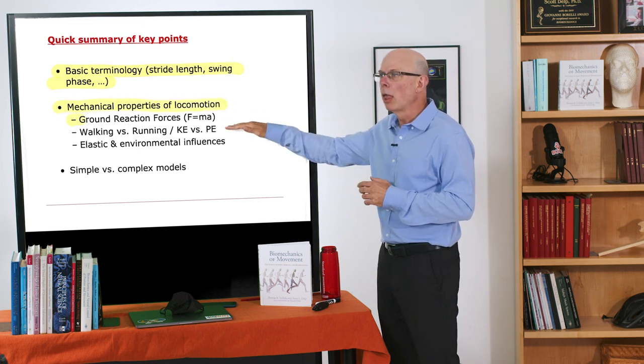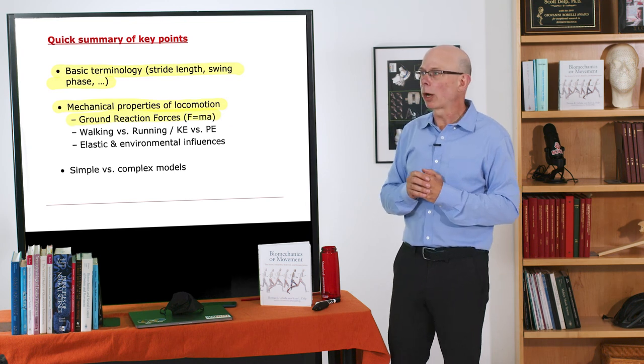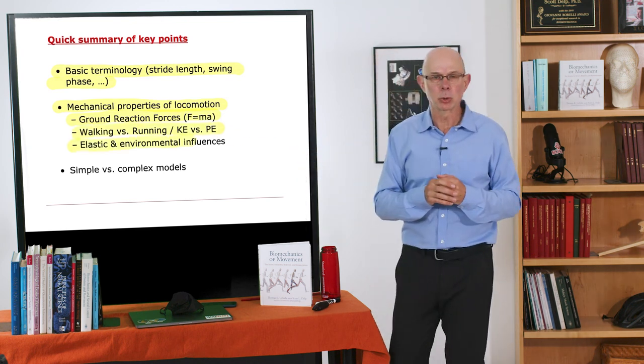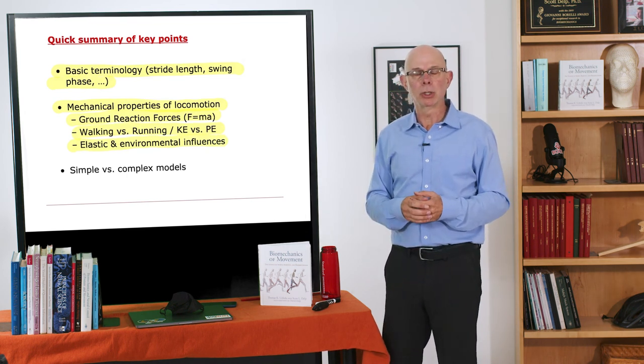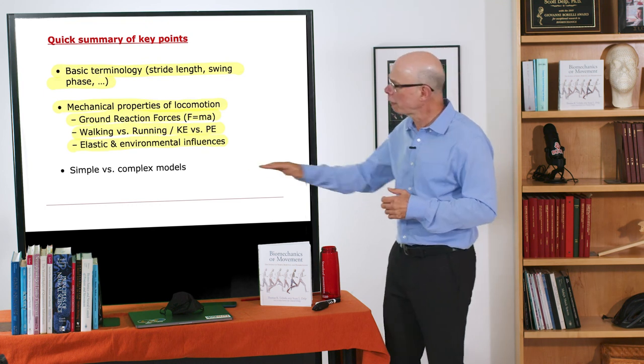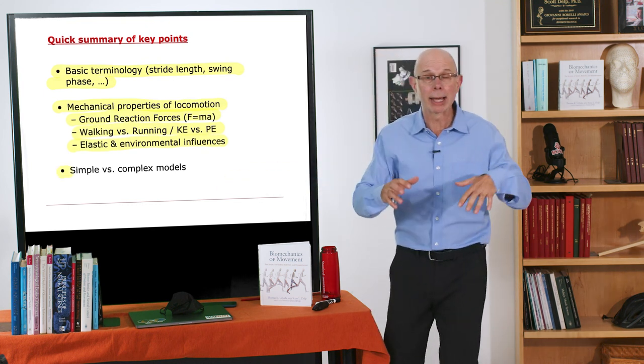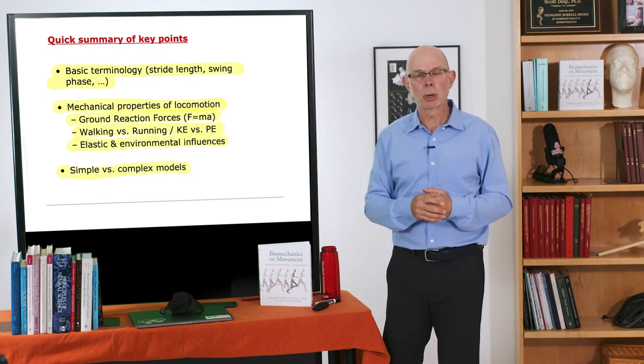Some key concepts are these mechanical properties of locomotion: Newton's second law, the gravitational and potential energy during running and walking, and the elastic environmental influences. So how do tendon elasticity affect locomotion? And how does gravity affect locomotion? And finally, we just touched on, and we'll get into this much more, simple models versus complex models. So that's where we're headed.